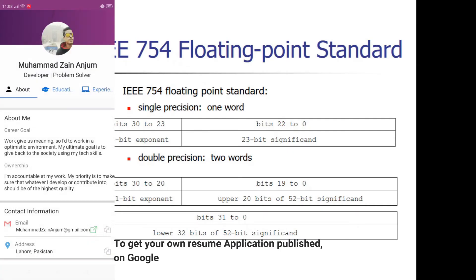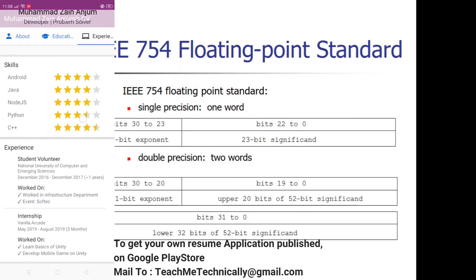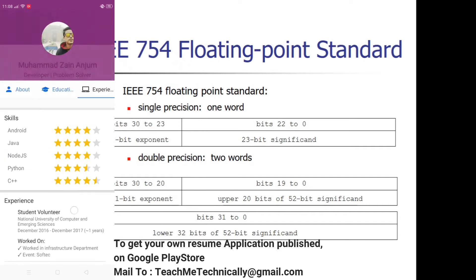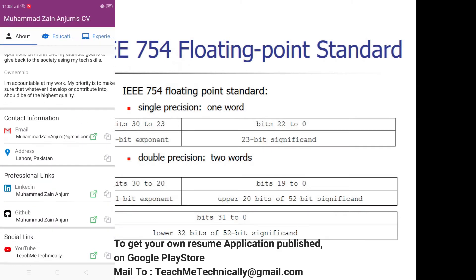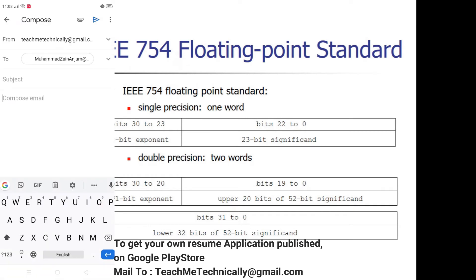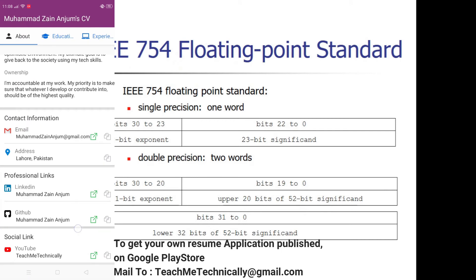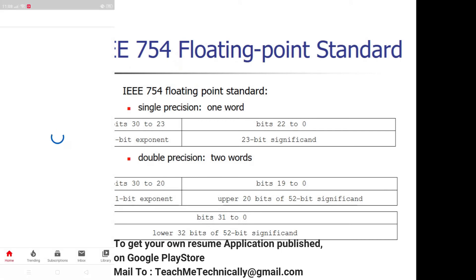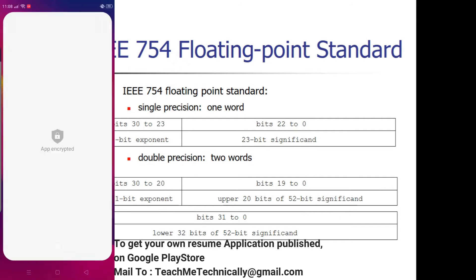In this lecture we are going to learn how to convert a number from decimal to binary and then represent it as a floating point number. We will convert a decimal number into binary and then convert that binary number into a floating point standard so that we can represent it in 32-bit or 64-bit format.